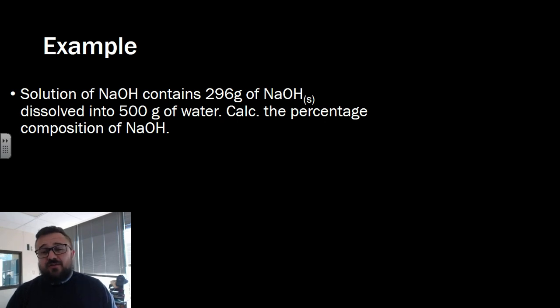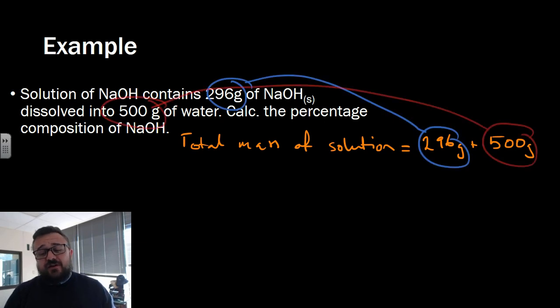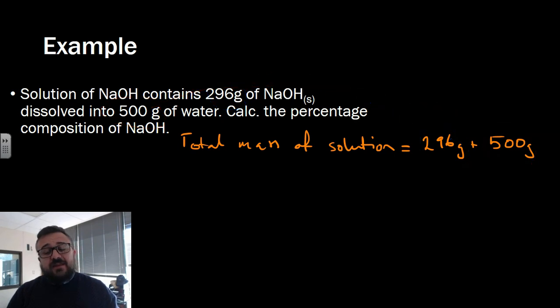First thing we need to work out, and this is the little trick part, is the total mass of solution. It's 296 grams for the sodium hydroxide and 500 grams for the mass of the water. When we add that together, that gives us 796 grams—that's our total mass of solution.